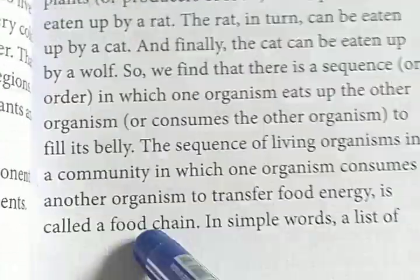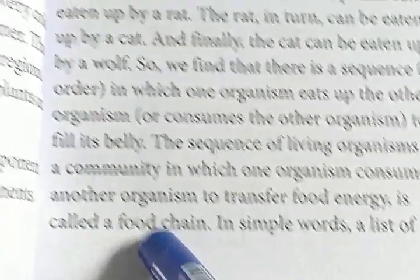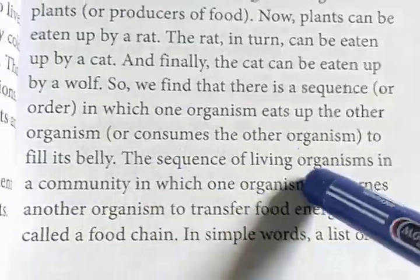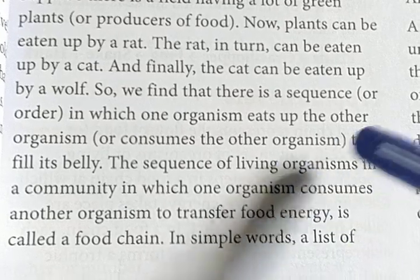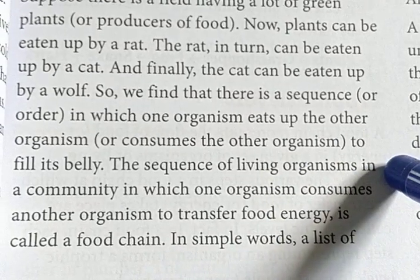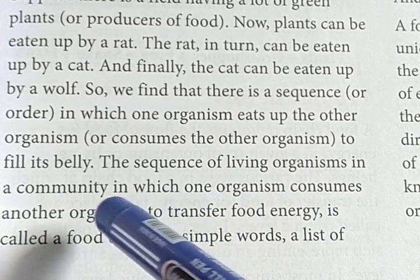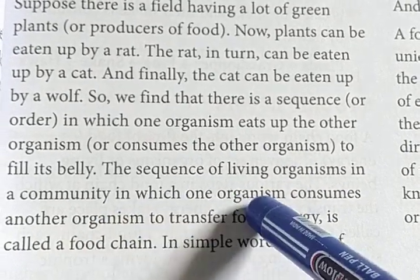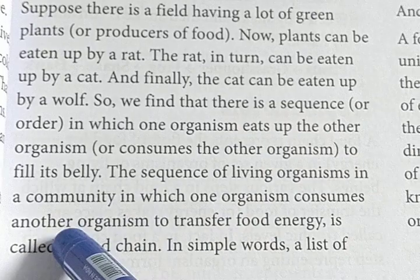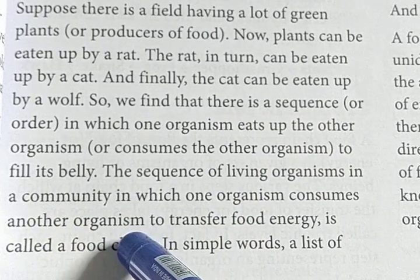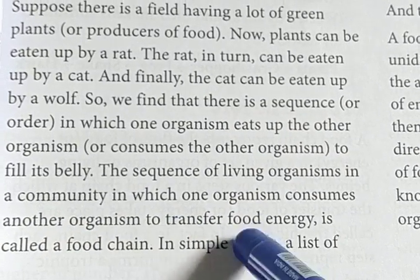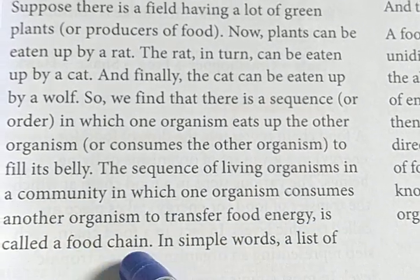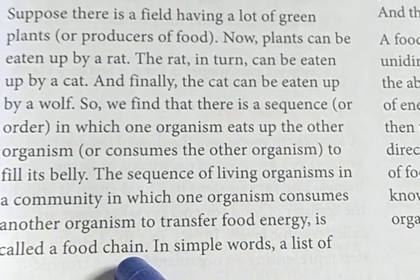So what is a food chain? A food chain is the sequence of living organisms in a community in which one organism is consumed by another organism to transfer the food energy. That is called a food chain.